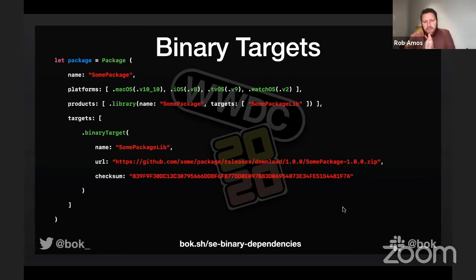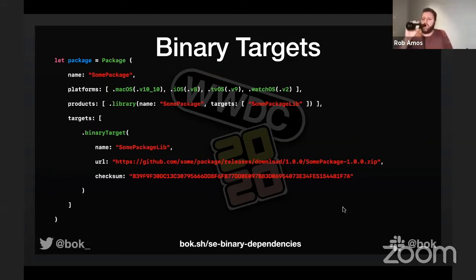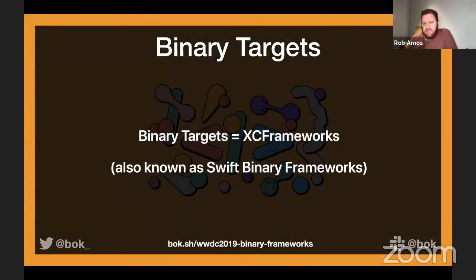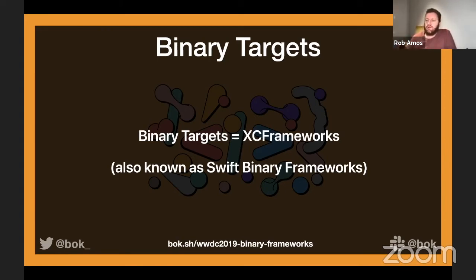The big caveat is that it's called a binary target, not a binary dependency, because when you ship a binary package you're opting out of Swift's dependency resolution — so you have to manage it all yourself. A quick note on terminology: binary targets end up being basically XCFrameworks, also known as Swift binary frameworks. Whatever language you want to use, the end result is an XCFramework, which is a directory that mirrors closely to the original frameworks we're used to.